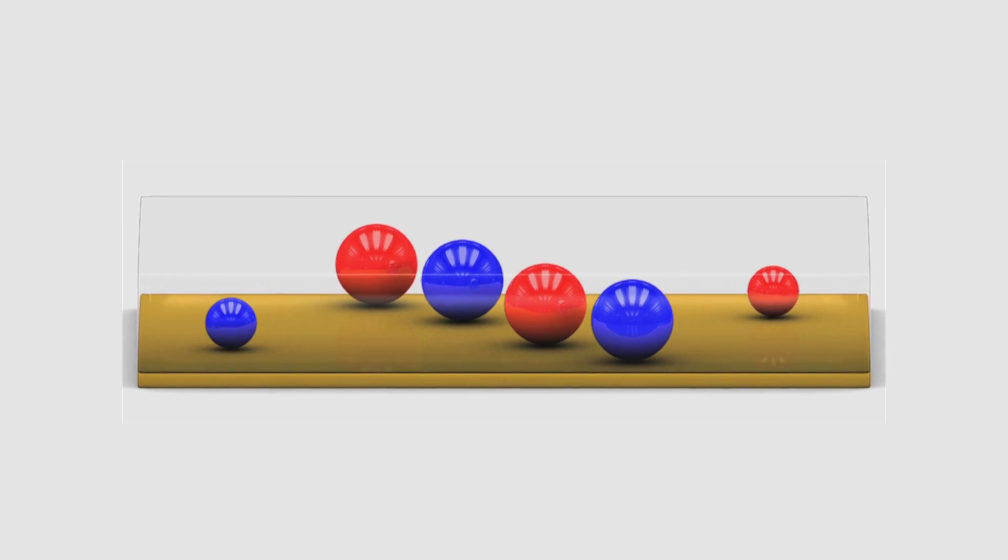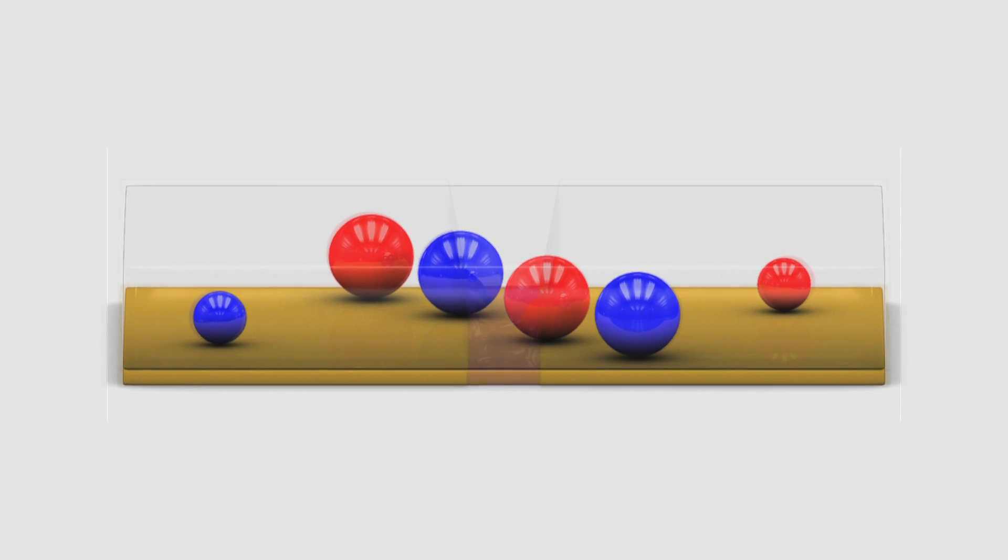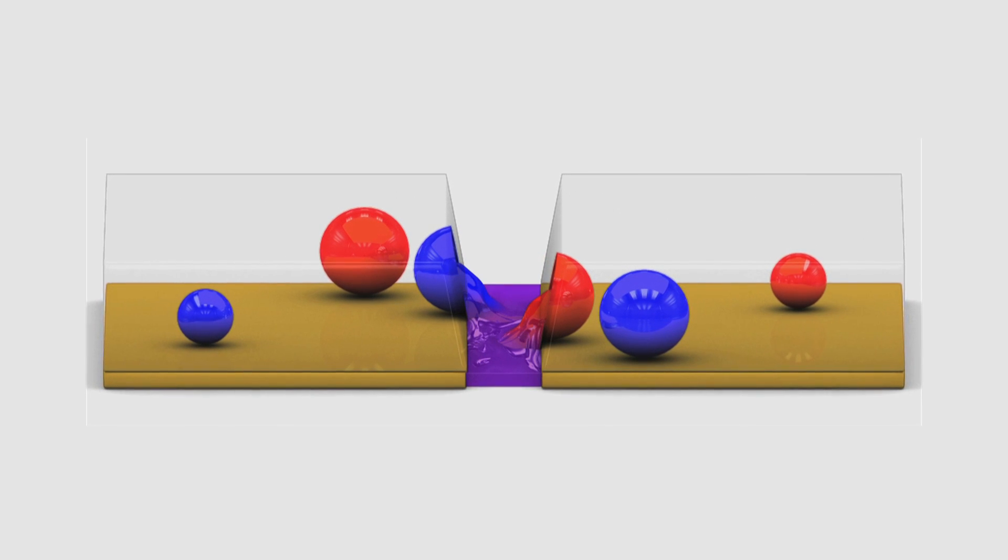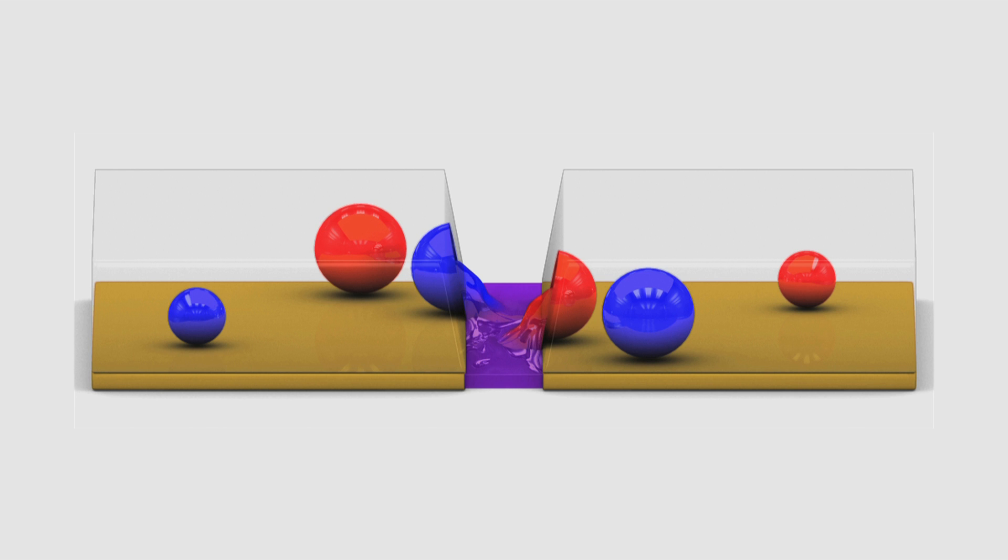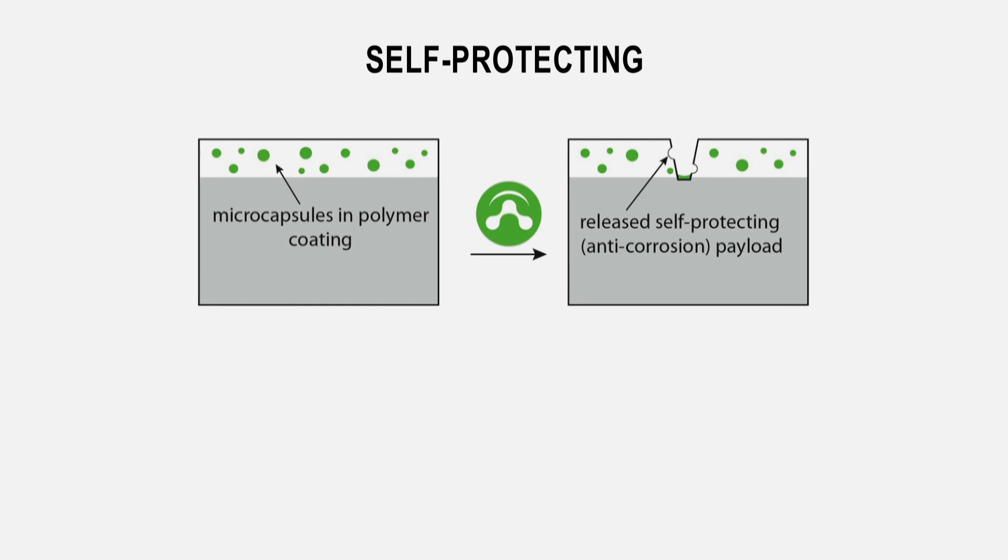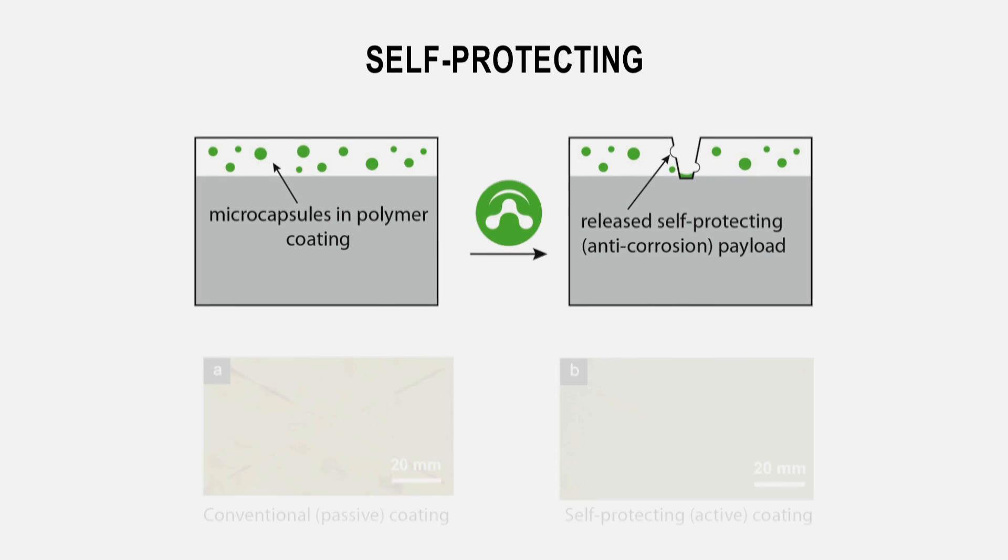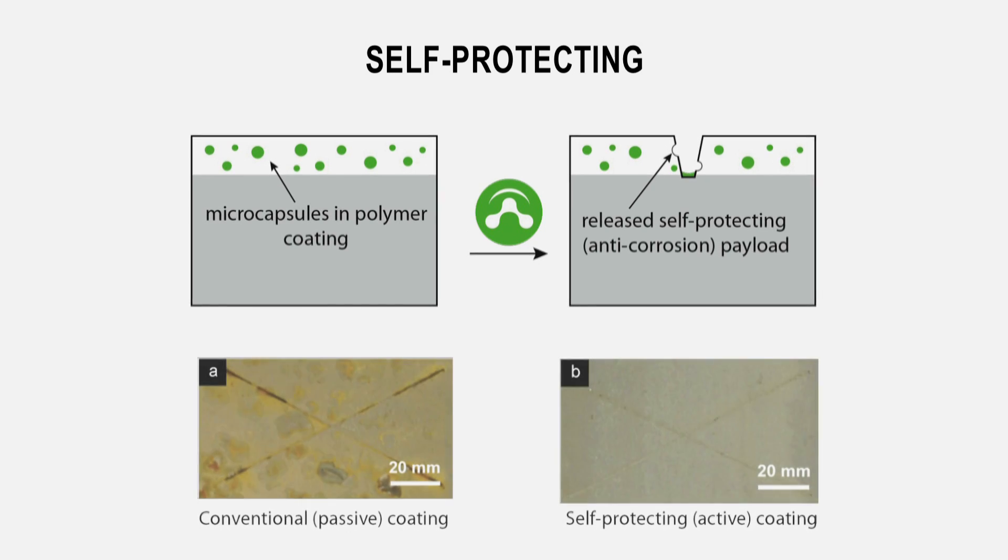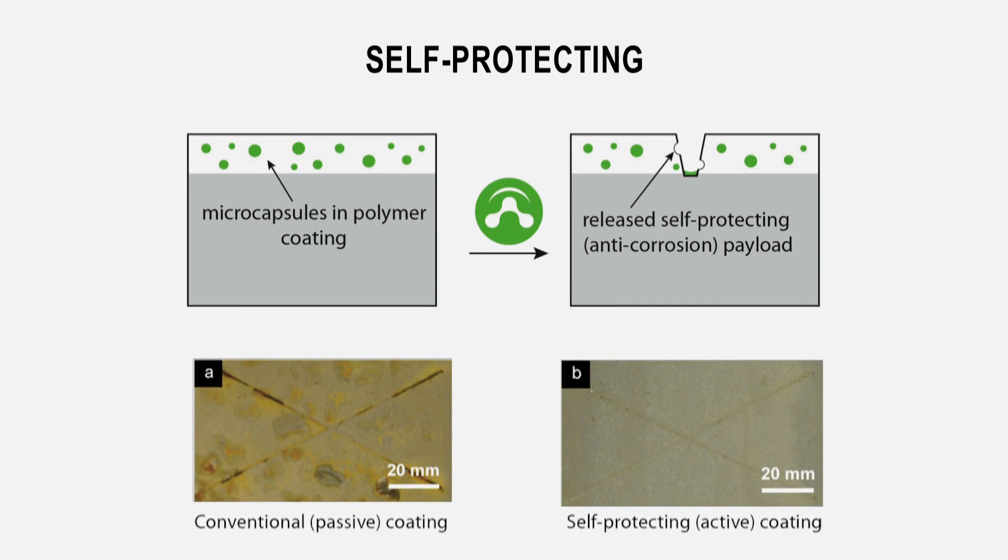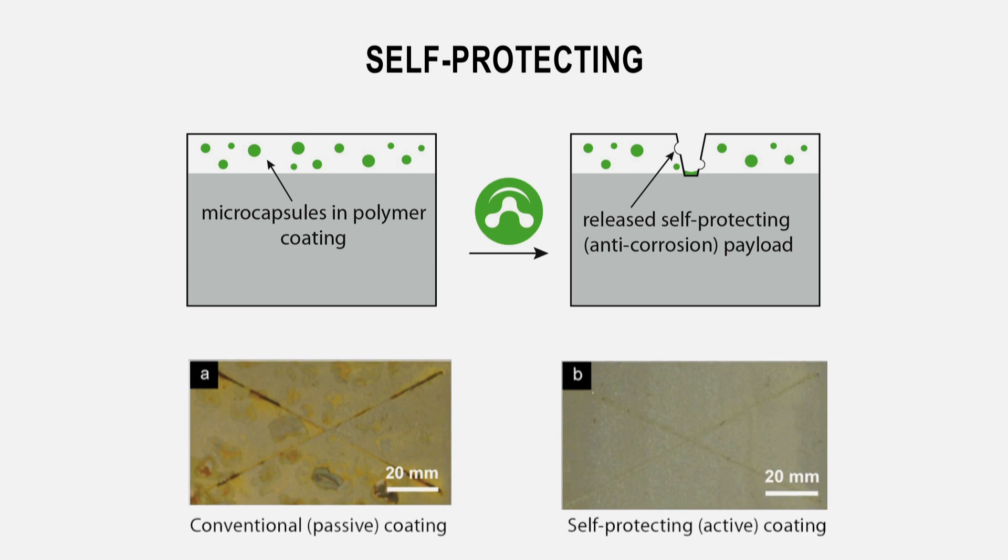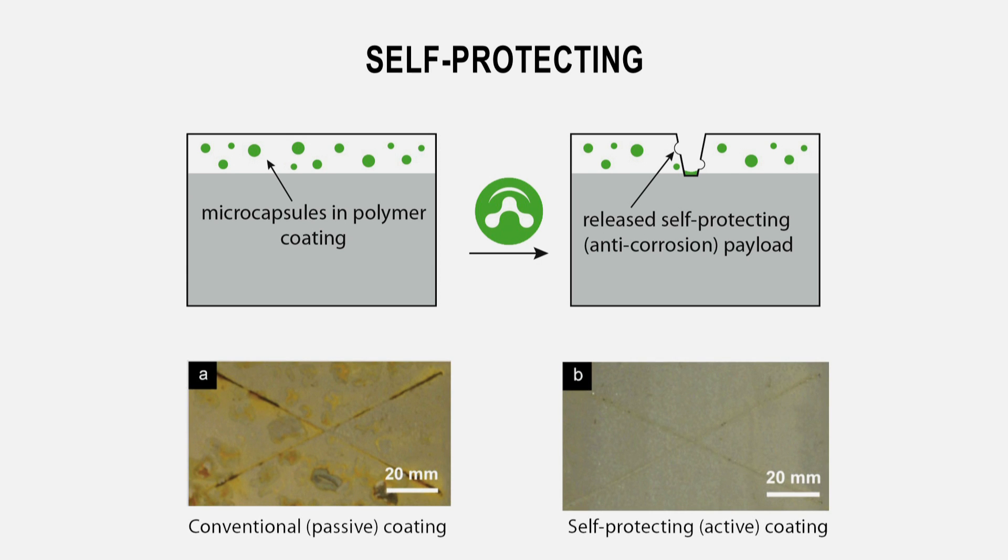You have capsules that stay essentially metastable in the material until the environment causes a stress that causes them to rupture, release their contents, and the science is in what comes out and basically reacts. We started with self-healing paints and coatings. And these are coatings that you would put on a metal as something that you would like to protect. And these kinds of coatings will heal themselves when they've got scratch damage.